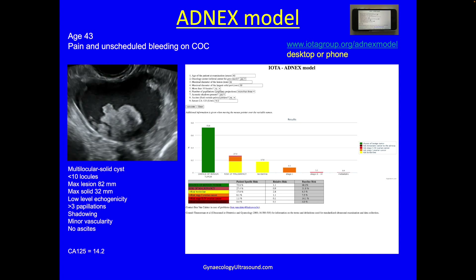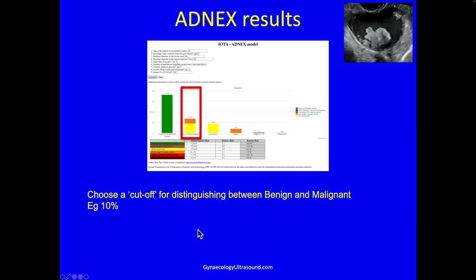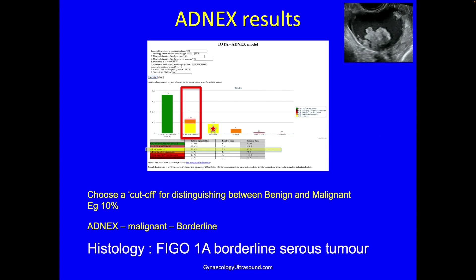You hit calculate and this is what it looks like. The ADNEX result always comes up with a chance of it being benign and the risk of it being malignant, and these two have to add up to 100. The risk of malignancy is 27.4 — but it's not an actual percentage, so you choose a cutoff. We choose 10%, so if it's over 10% we say it's malignant. The risk of malignancy comprises the risk of it being borderline, stage 1, stage 2 to 4, or metastatic to the ovary. This model says it's malignant at over 10%, with the highest probability being borderline. It was removed and was indeed a borderline serous tumour.